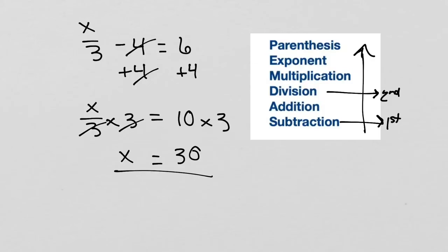In most instances, for two-step equations, you will work out your addition or subtraction part first, then your multiplication or division part next. Please, this is not always the case. Topics like this require practice, practice, practice. You want to be so good at it that you don't need to use the reversal of the order of operations anymore — you see a question and you just know which one to do first and second. You can get more practice with the link in the description.